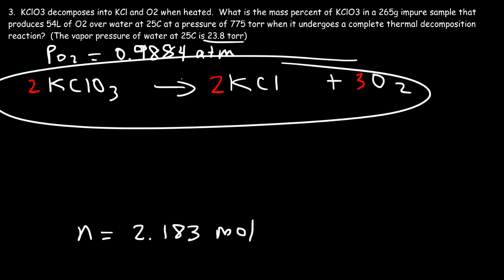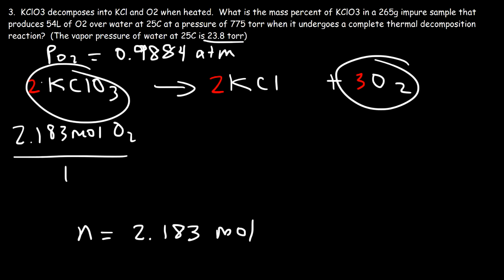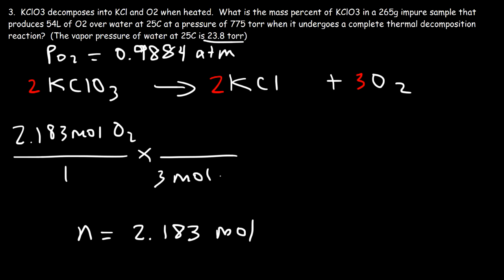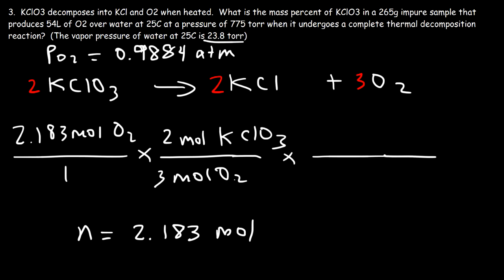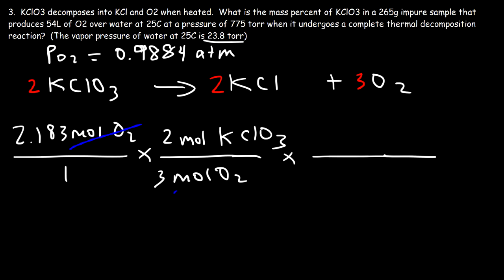Now we use stoichiometry to convert moles of O2 to moles of KClO3. Starting with 2.183 moles of O2, the molar ratio between O2 and KClO3 is 3 to 2 — for every 3 moles of O2 produced, 2 moles of KClO3 are consumed. So moles of KClO3 = 2.183 × (2/3).